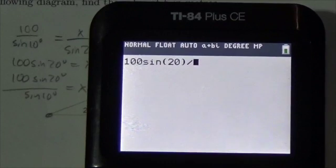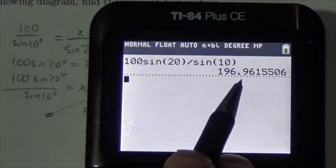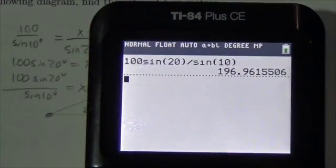Now I'm going to divide by the sine of 10 degrees. And I get a side of 196.96. So we'll round that right now to 197. But we're going to keep this number right here.